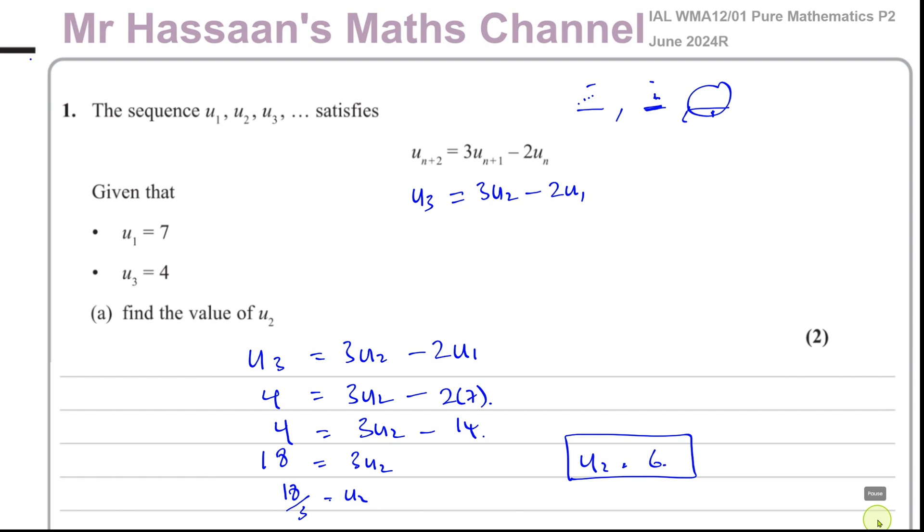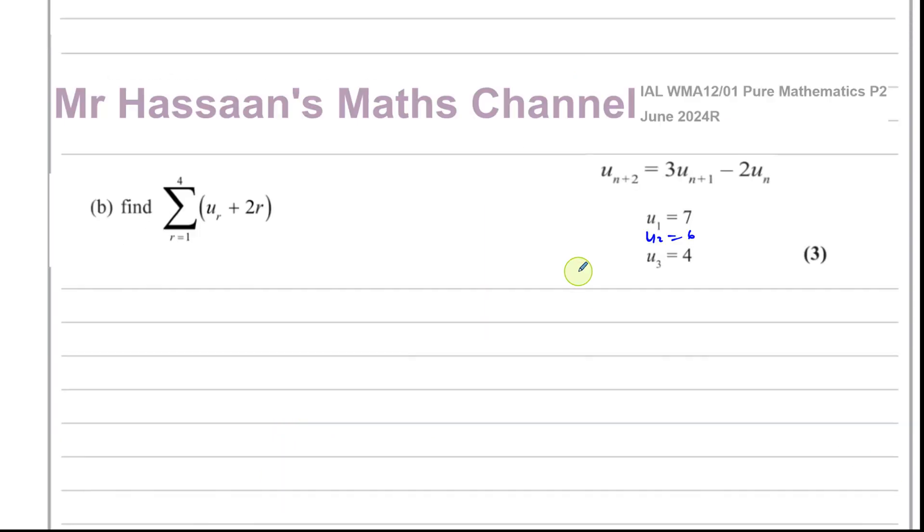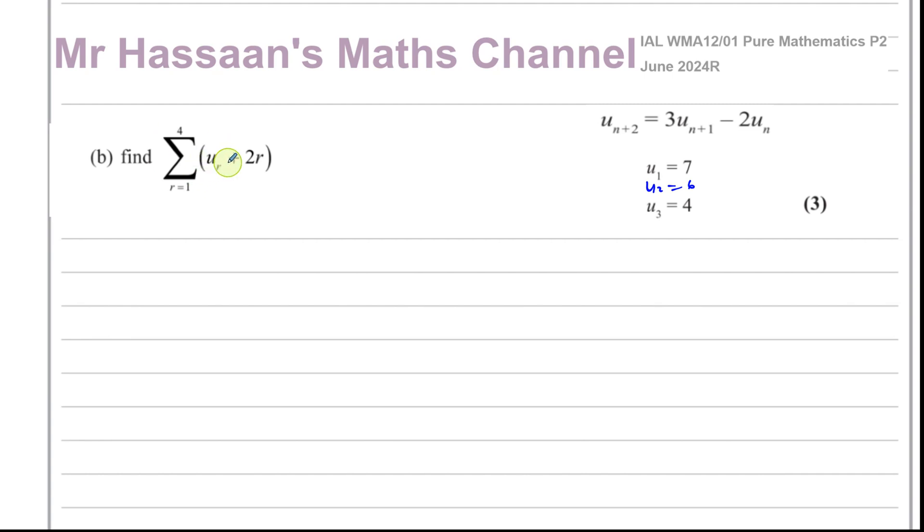Now, what is u₁? Well, u₁ is this term here, which is 7, so that's 7 plus 2. Plus then you have u₂, which is 6, 6 plus 4. Plus then you have u₃, which is 4, so you have 4 plus 6. And then you have u₄. Now we've got to find what u₄ is.